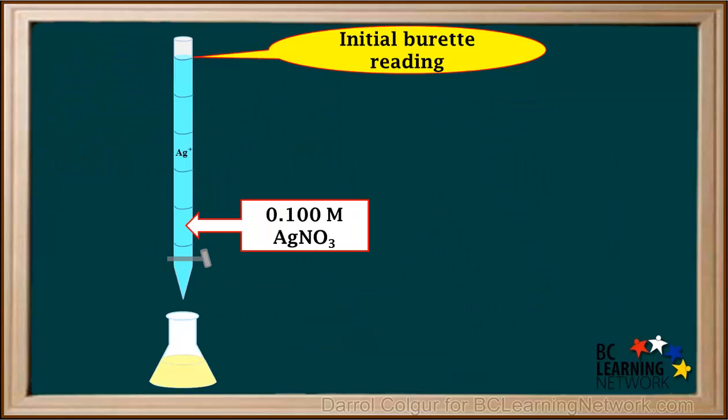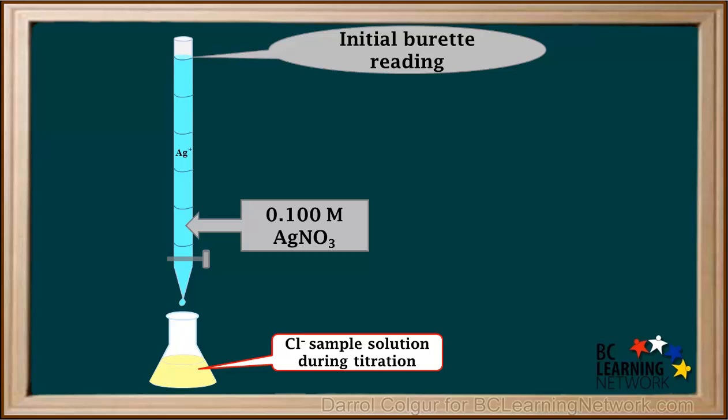We record the initial reading of the AgNO3 solution in the burette, just before we start the titration. Then we begin the titration, adding drops very slowly while swirling the flask.